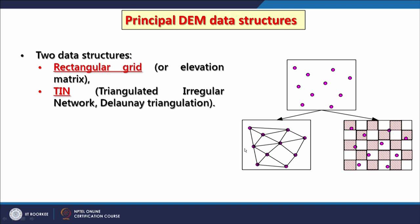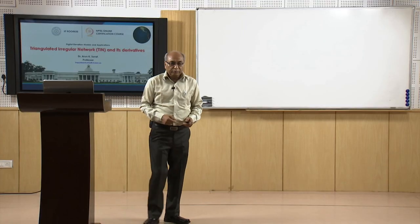When creating a TIN, an irregular network of triangles is made, and this area represents the surface, whereas in raster the entire rectangular area represents the surface. This is one of the limitations of TIN — at the margins or boundary of the data, TIN has limitations. But there are some advantages which we will see.